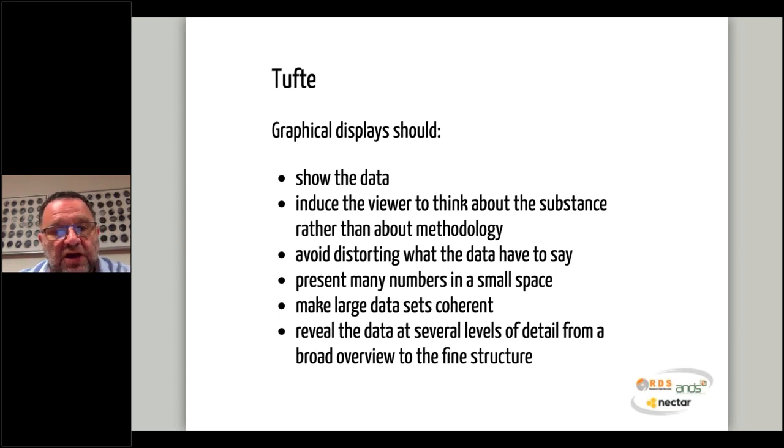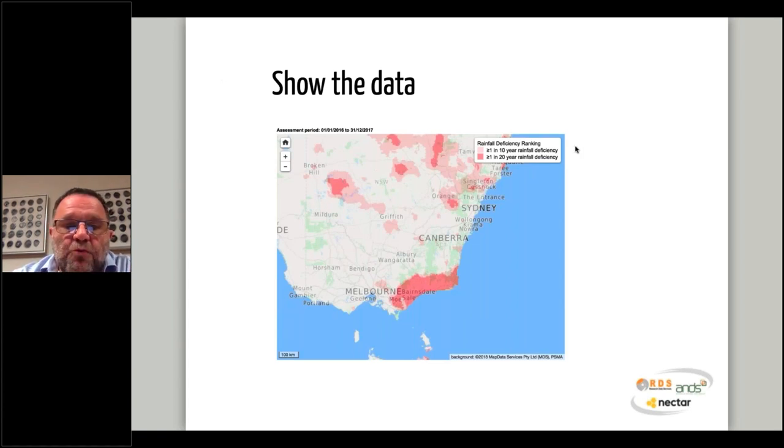In his book he's got many fine examples. However, I've tried to find more modern examples, and I've taken some from the work that I do. The first one: show the data. What we're looking at here is a rainfall map of Australia. The government instituted a plan where they would give farmers concessionary loans if they were in a region that had suffered a 1 in 10 year rainfall deficiency or 1 in 20 year rainfall deficiency. The map we're seeing here is a map where users can typically zoom in and out, but what we've done is to show only those areas that are affected or covered by this concessionary loan. The pink and red areas are the areas that had been affected by either 1 in 10 or 1 in 20 year rainfall deficiency.